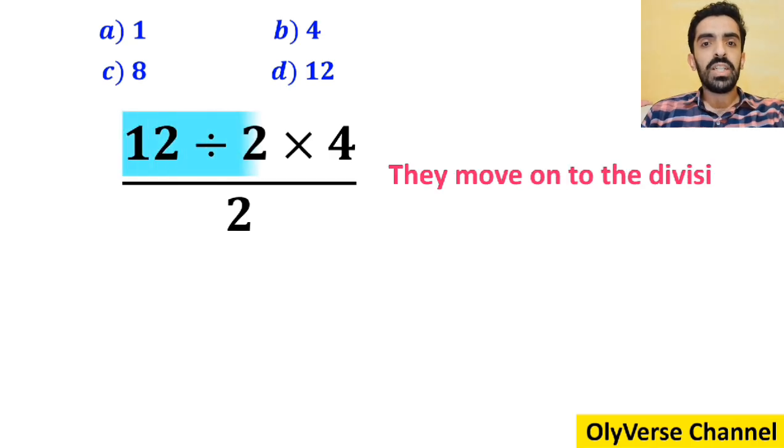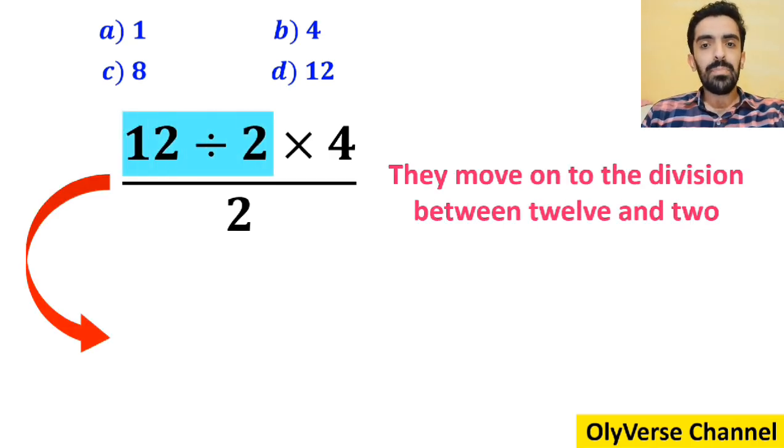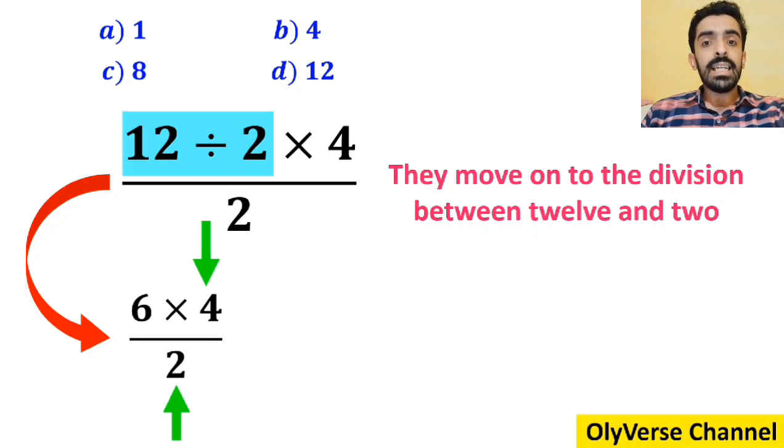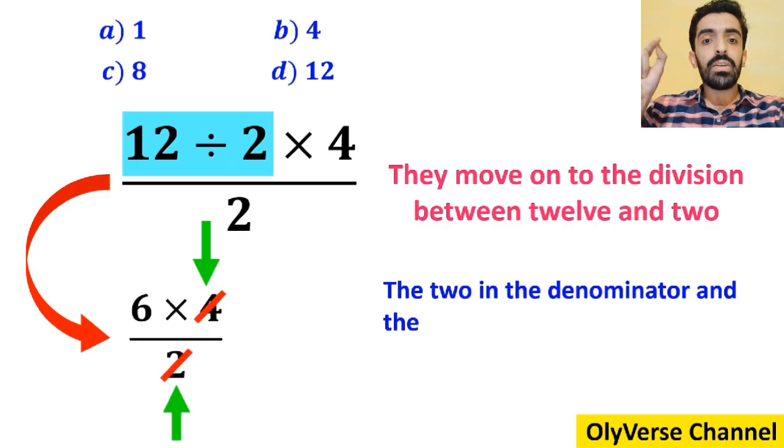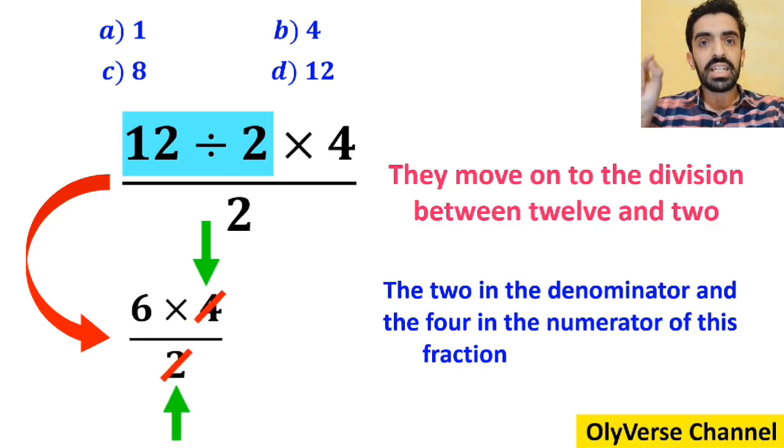And the next step they move on to the division between 12 and 2, simplifying this expression to 6 multiplied by 4 over 2. Then they say the 2 in the denominator and the 4 in the numerator of this fraction can be simplified.